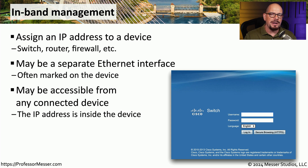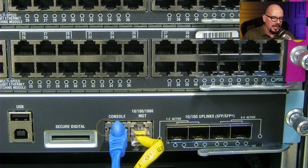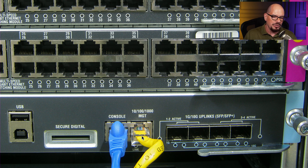When configuring that switch, router, or other device, you provide it with a management IP address, subnet mask, and other important networking details, and from that point you can connect to the device across the network. Usually the device has a web server running internally, or it may be using an SSH server so that we can connect from our SSH client. Here's an example of a switch that has both a serial console connection and a separate 10/100/1000 management interface. You assign an IP address to that interface, connect your network to it, and then simply reference the IP address to connect to the device across the network.